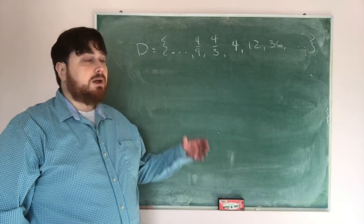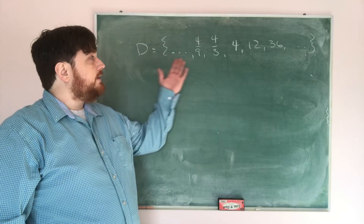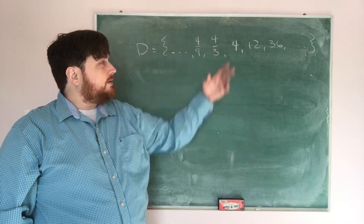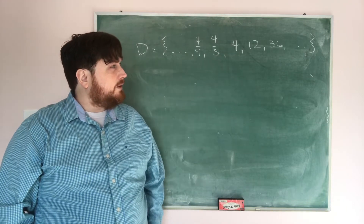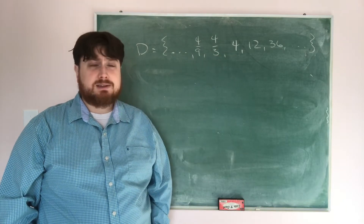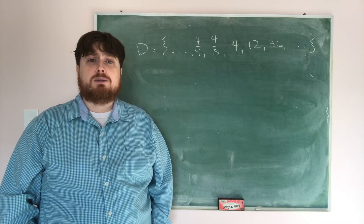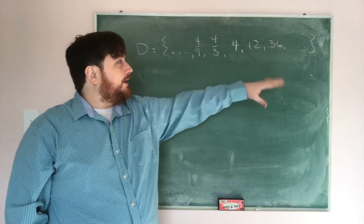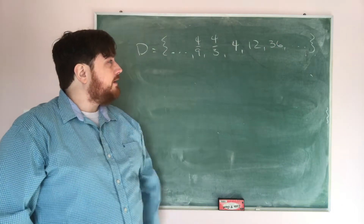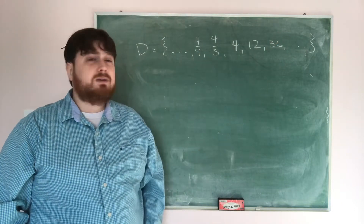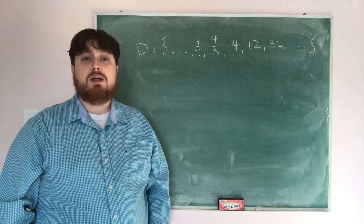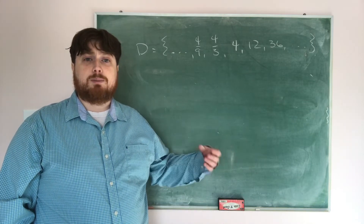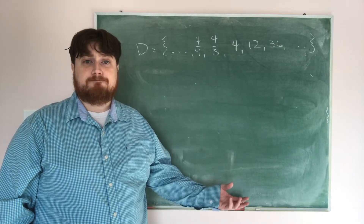Now, for our next example, set D is {4/9, 4/3, 4, 12, 36, ...} going off in both directions — bigger and smaller. What we need to do is find the pattern and write it down using a rule method.